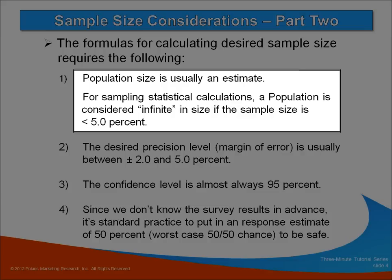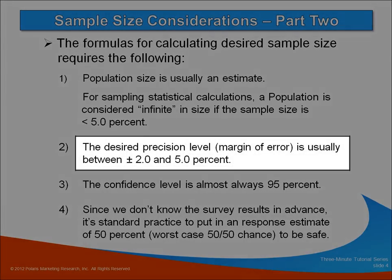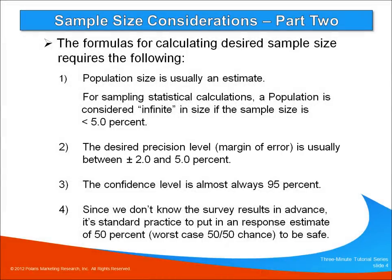As a general rule of thumb, if your population is larger than 500, just mark it as infinite. In terms of the desired precision level, or the margin of error, it's common practice to choose something between plus or minus 2 to 5%.